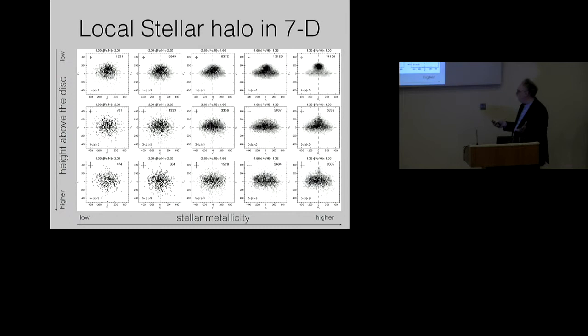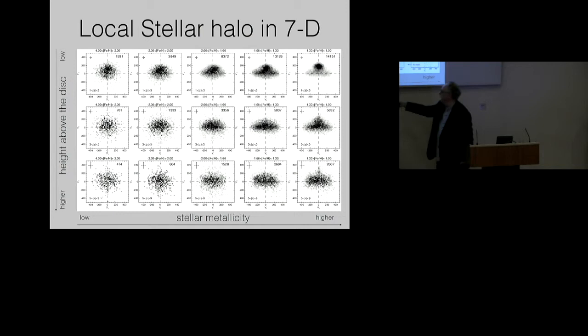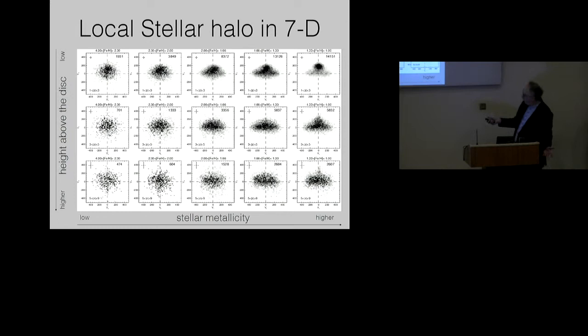Here's a plot of distribution of stars in velocity space. It's a rather busy plot. What is varying horizontally is stellar metallicity from low to high, and what is varying vertically is the height above the galactic disk from low to high. And just by picturing this, we can see that there are meatballs and there are sausages.